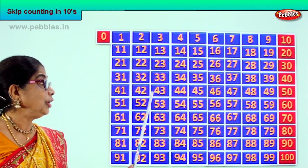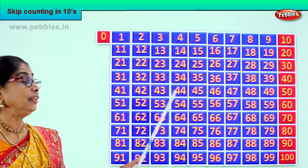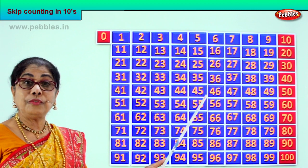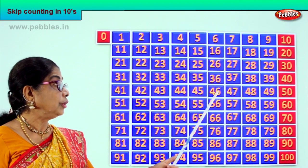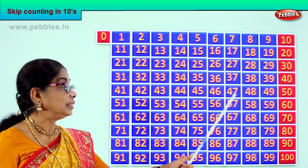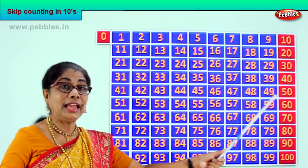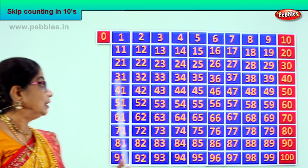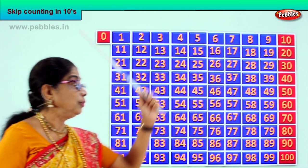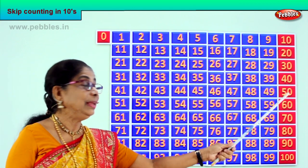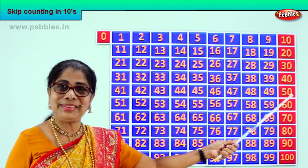Next you have forty. Forty-one, forty-two, forty-three, forty-four, forty-five, forty-six, forty-seven, forty-eight, forty-nine, fifty. So forty-one to fifty — we leap to fifty. Five.